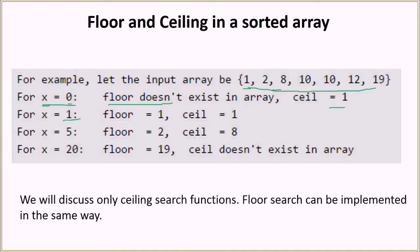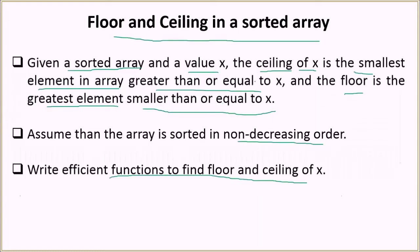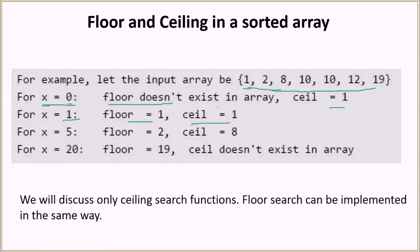Similarly, for the value 1, the floor and ceiling both will be 1, because in the definition of floor and ceiling we have 'or equal to'. So if the number itself is present in the array, it will be both the floor and the ceiling. For x equal to 5, the largest element smaller than 5 is 2 and the smallest element greater than 5 is 8, so floor is 2 and ceiling is 8.